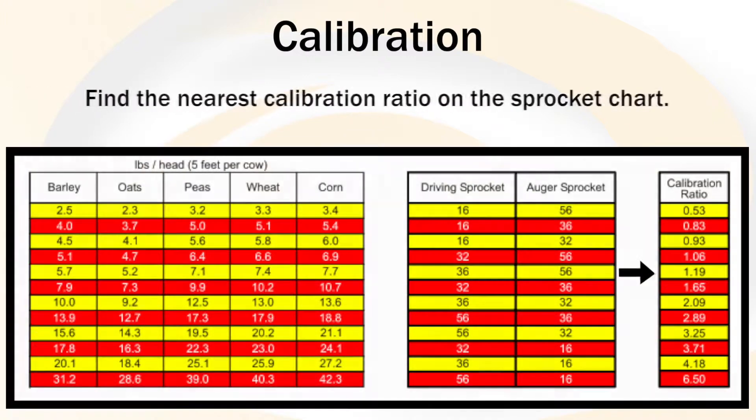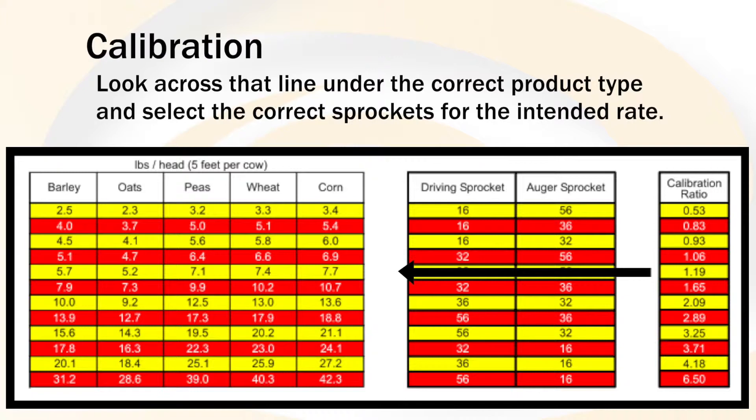Find the nearest calibration ratio on the sprocket chart. Look across that line under the correct product type and select the correct sprockets for the intended rate.